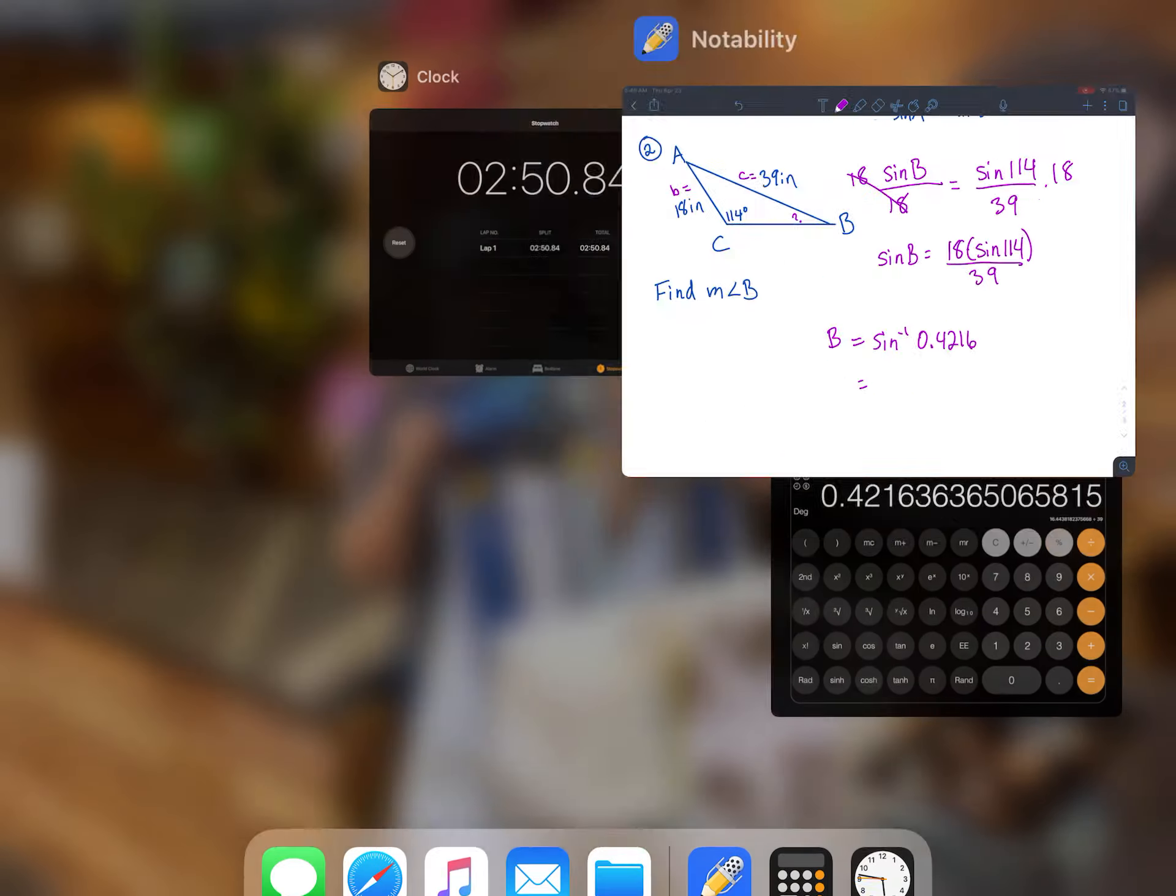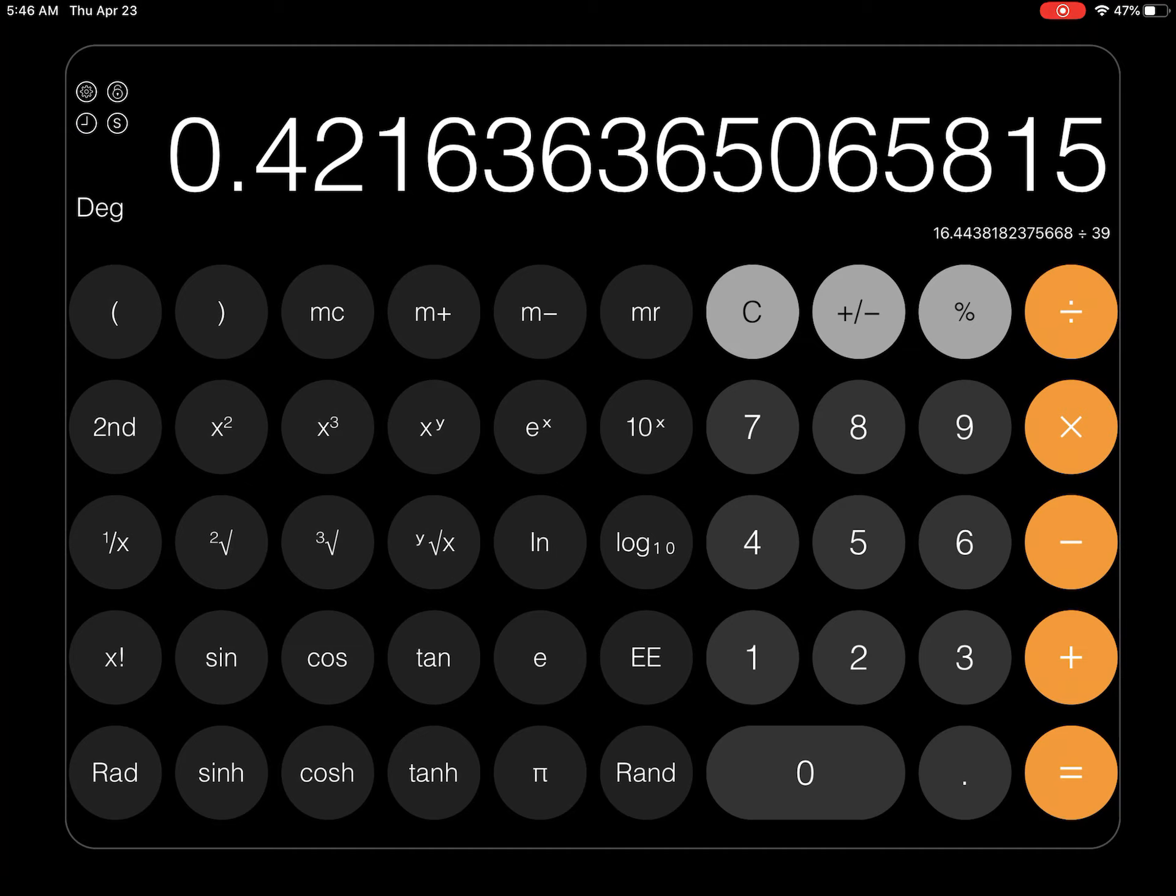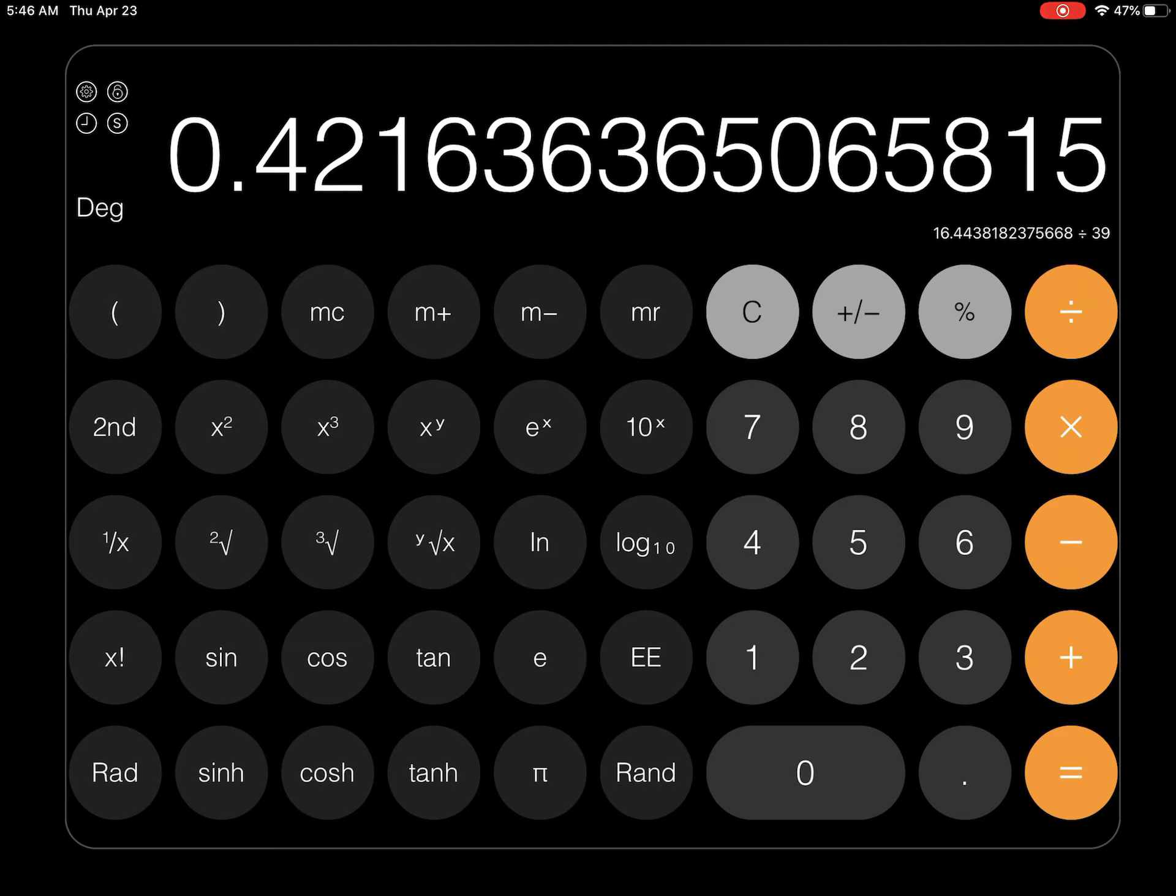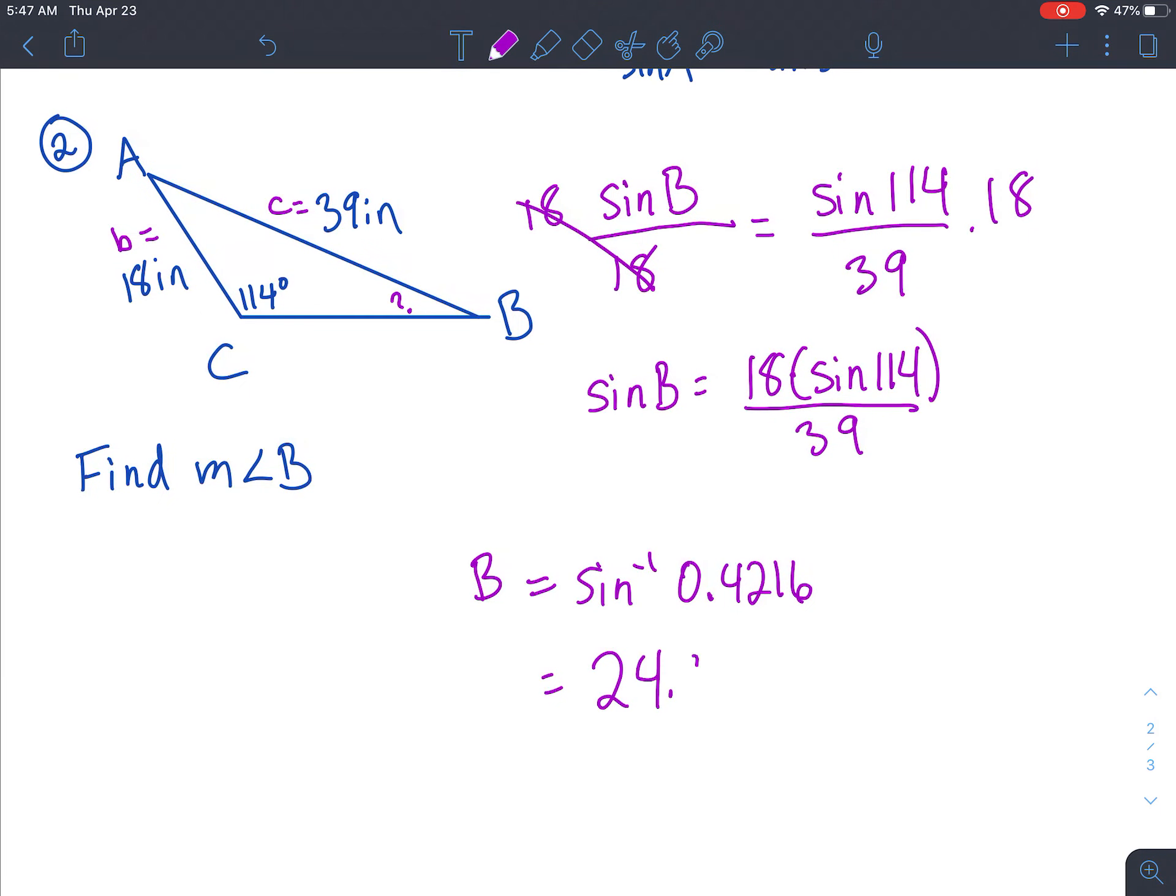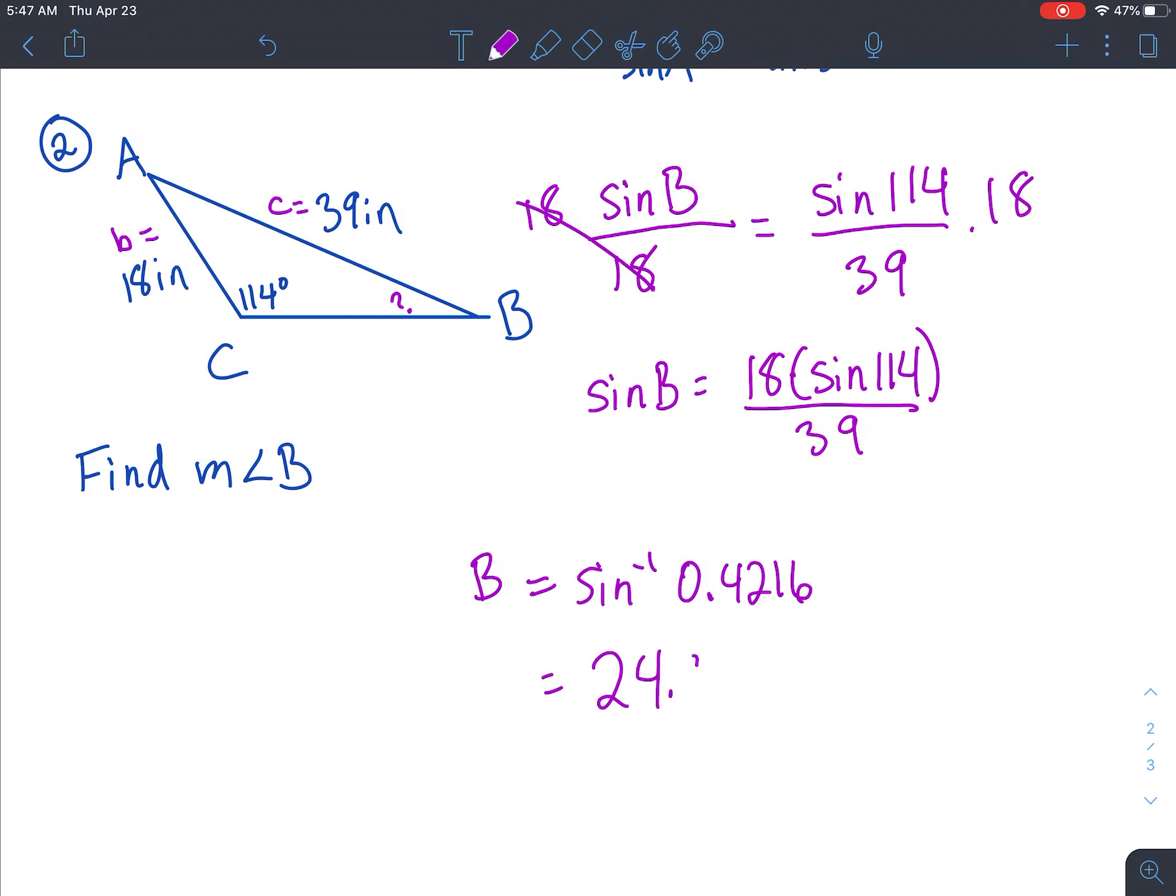And that would mean angle B equals this amount here, which we're going to punch into your calculator. It's more accurate if you don't have to recopy it. So having this long chain of numbers will be more accurate. Say second sine, you get 24.9. 24.9 degrees. And that tells us the actual angle of that missing sign. So that's what we're doing today.